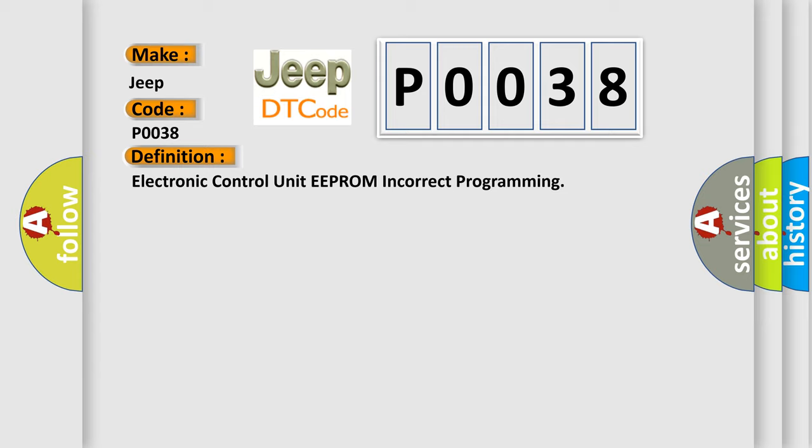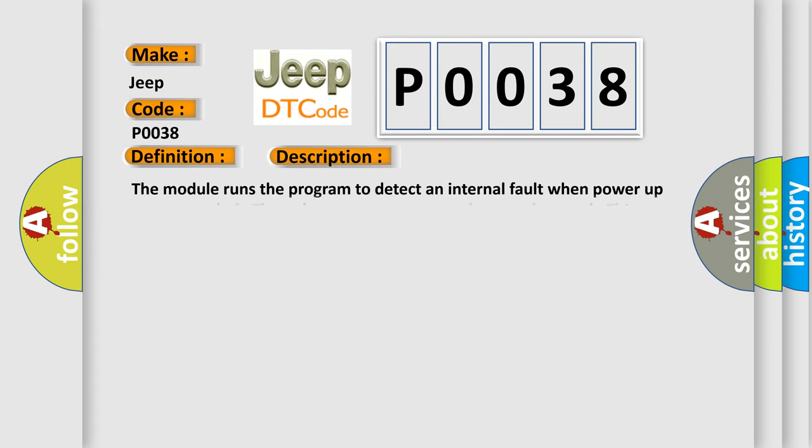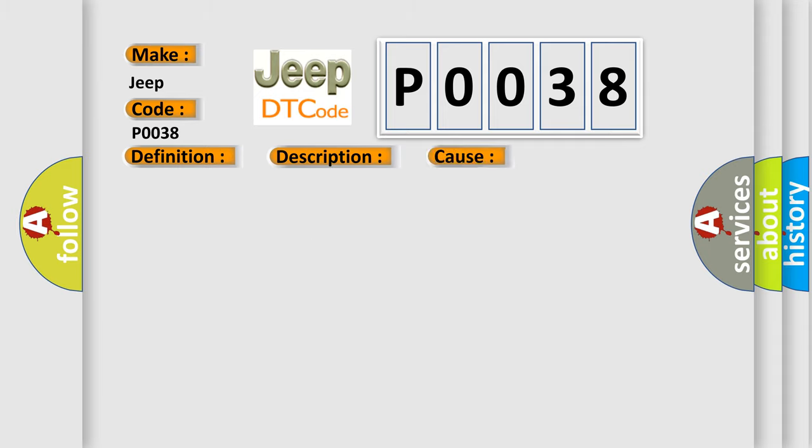And now this is a short description of this DTC code. The module runs the program to detect an internal fault when power-up is commanded. The only requirements are voltage and ground. This program runs even if the voltage is out of the valid operating range. This diagnostic error occurs most often in these cases. The module has detected an internal malfunction.